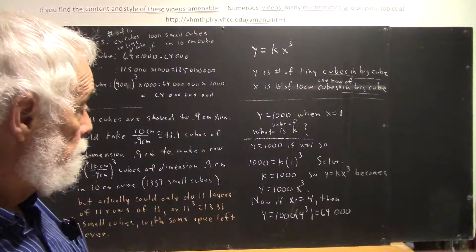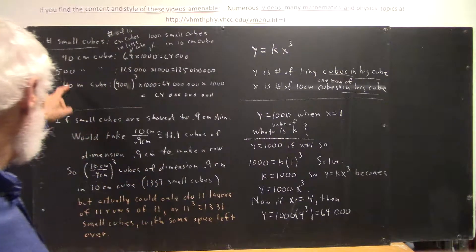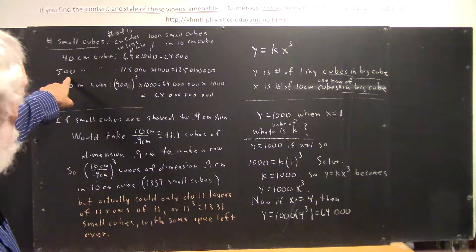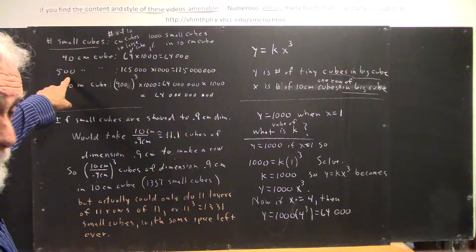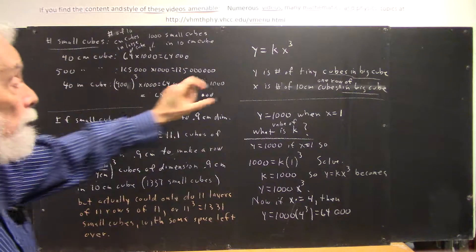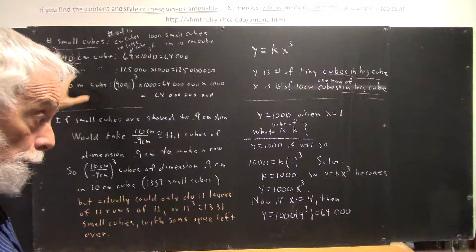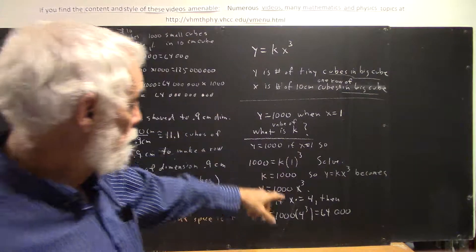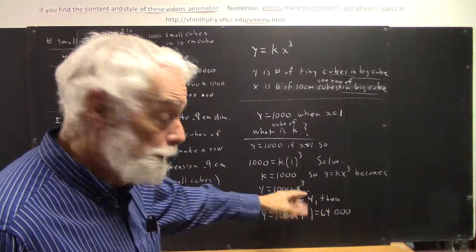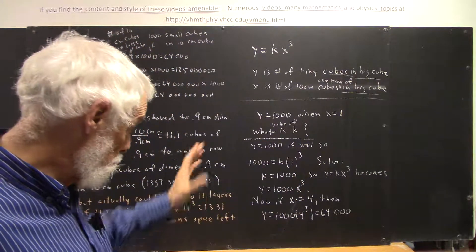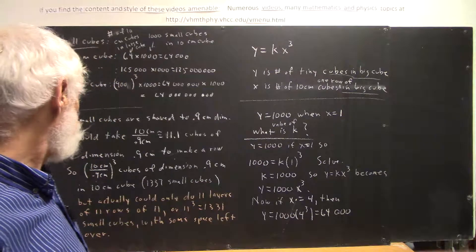Now, if you wanted the number in your 500 centimeter cube, then x would be what? Well, it takes 50 10 centimeter cubes to make one row of this one. You would plug in 50 for x, and you would get your 125 million.